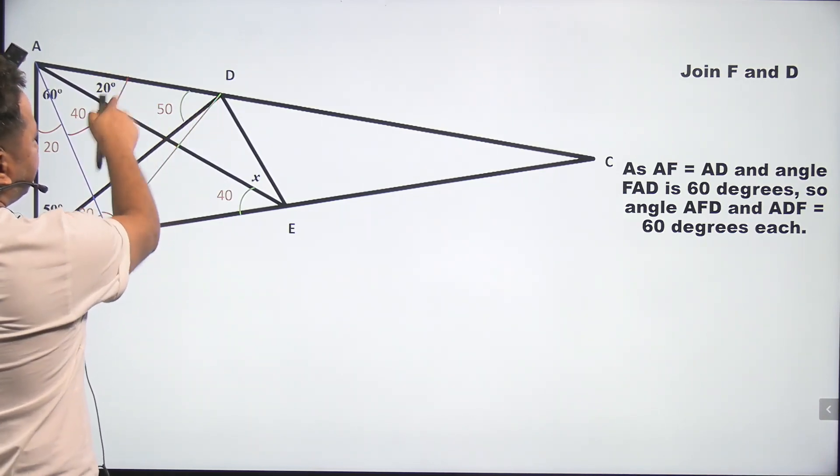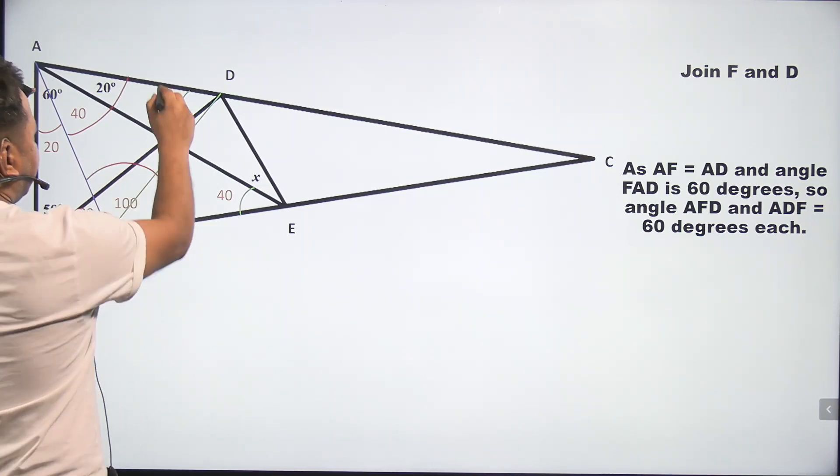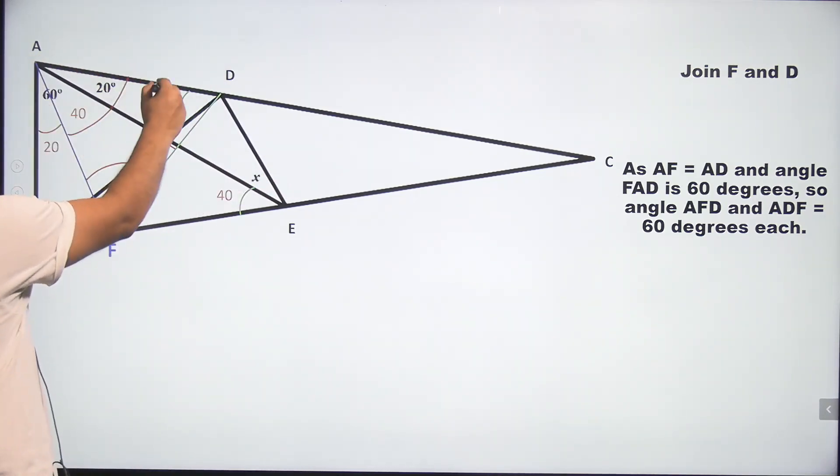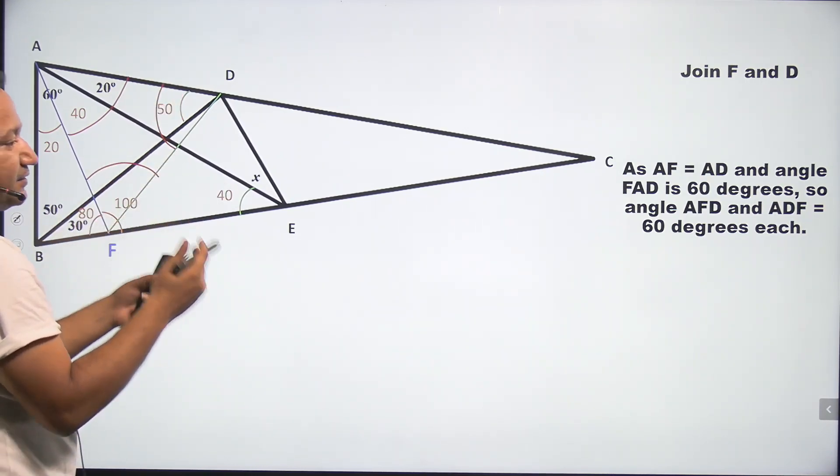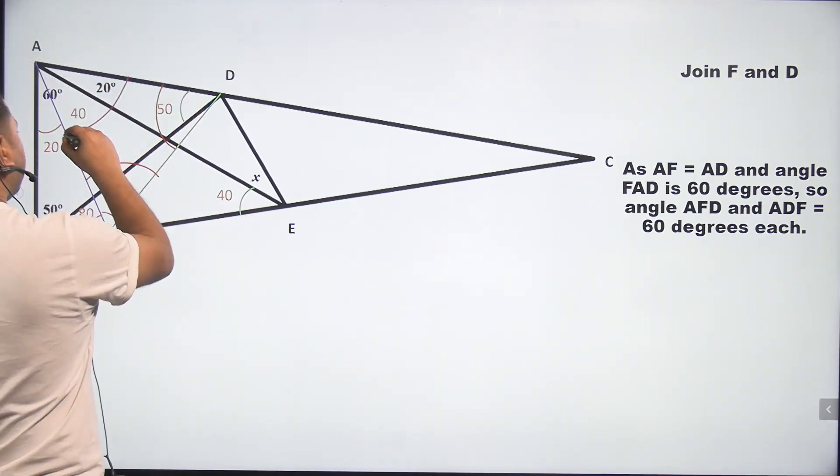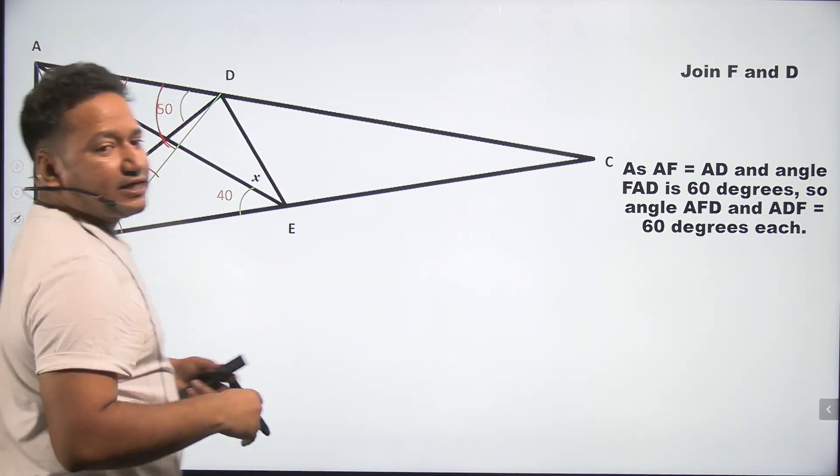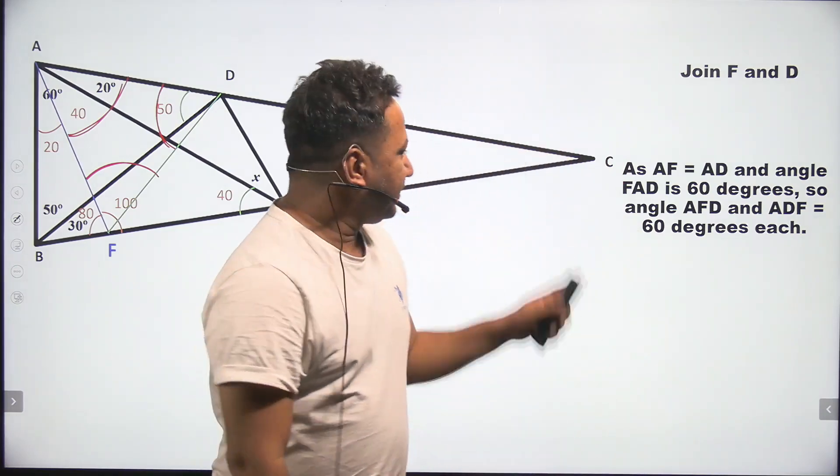Now, AF and AD are equal. This is 60. That means this whole angle and this whole angle should also be equal. So this one is 60 and these two are equal. That means that these two will also be of 60 degrees each. This thing is 60 and sum of these two would be 120. And as both are equal, so 120 can be divided into two parts as 60 degrees each.